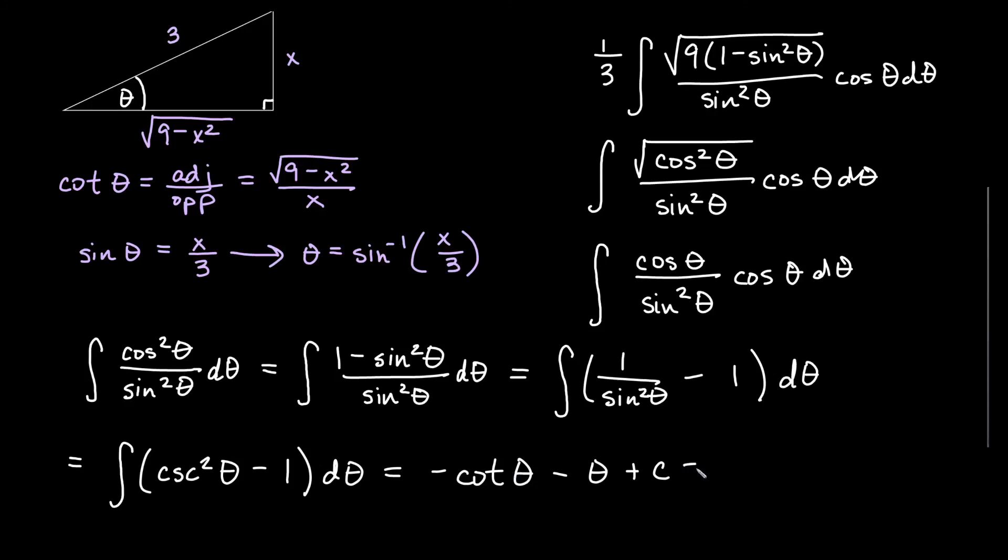Okay, taking those things and replacing our theta expressions with them, we'll get negative root of 9 minus x squared over x for our cotangent theta minus the inverse sine of x over 3 plus our constant of integration.